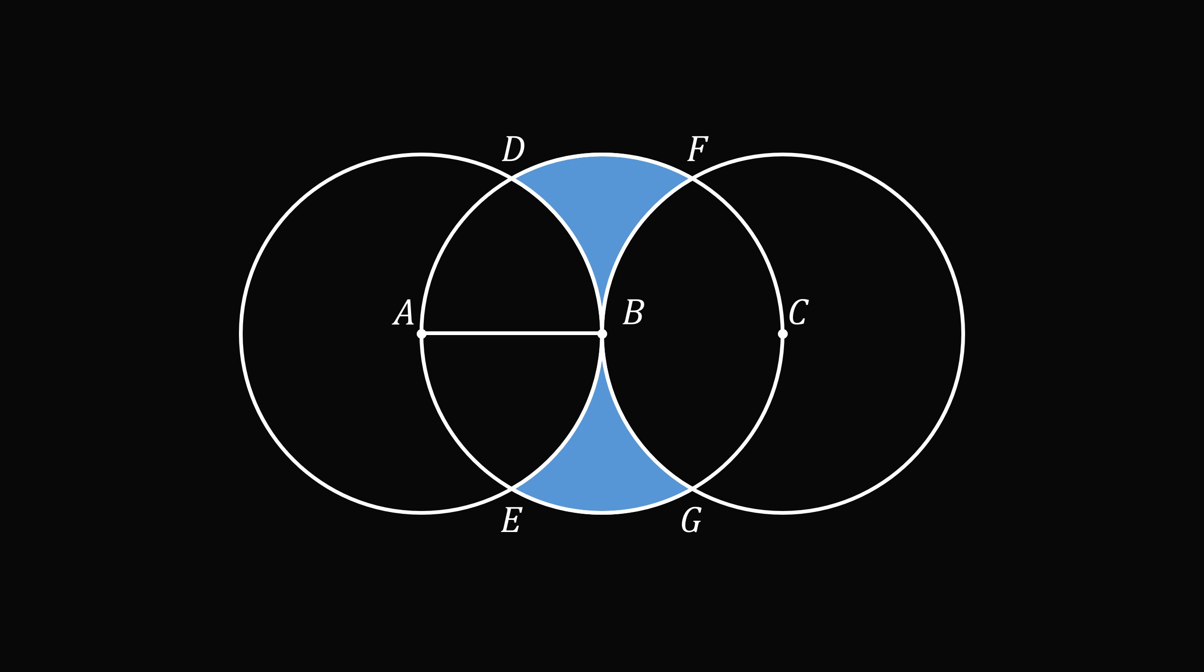We'll connect the centers A and B, and then connect the centers B and C. Each circle has a radius equal to 4, so AB is equal to 4 and BC is equal to 4. Now let's construct AD and AE, then we'll construct BD and BE, then we'll construct BF and BG, and finally we'll construct CF and CG.